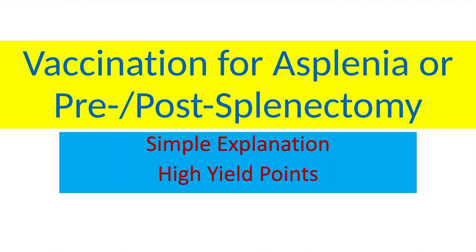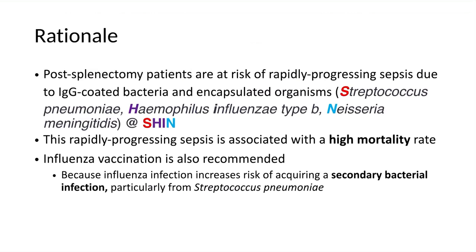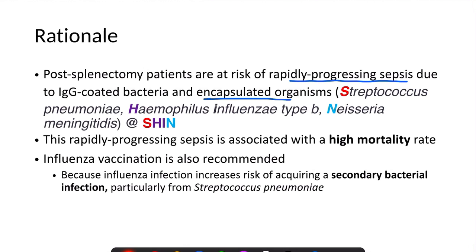Today, we'll discuss vaccination for asplenia or pre- and post-splenectomy status. Post-splenectomy patients or patients with asplenia are at risk of developing rapidly progressive sepsis due to encapsulated organisms. Those encapsulated organisms usually include Streptococcus pneumoniae, Haemophilus influenzae type B, and Neisseria meningitidis.